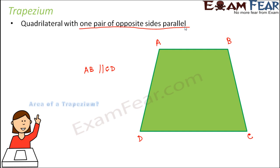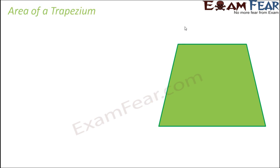Now you might wonder how do we find out the area of a trapezium, because we have never discussed that before. In this slide we will try to find out a generic formula for finding out the area of a trapezium, so that it becomes very easy to find the area of any trapezium whose dimensions are given. Let's say ABCD is the trapezium where AD is parallel to BC.